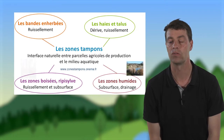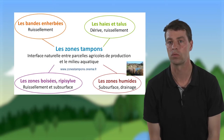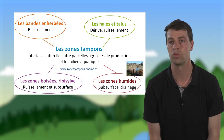Enfin, les zones tampons dites humides, comme les mares ou les plans d'eau, peuvent accueillir des eaux chenalisées ou canalisées hydrauliquement, comme les écoulements de subsurface ou le drainage agricole.